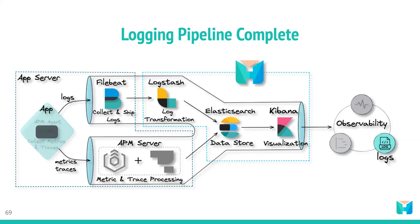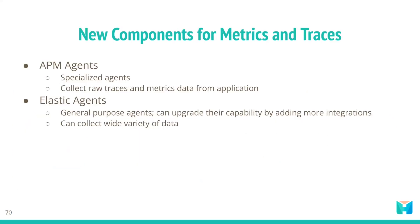With Logstash added, we have finished building our logging pipeline — consisting of Filebeat, Logstash, Elasticsearch, and Kibana. We now need to build the tracing and metrics pipeline, and for that we need four new components. The first two are two different types of agents: the Elastic APM agent, which is a specialized agent designed to collect raw traces and metrics data from an application, and the Elastic Agent, which is a more general-purpose agent whose capabilities can be expanded by adding integrations and which can collect a wide variety of data from different services.